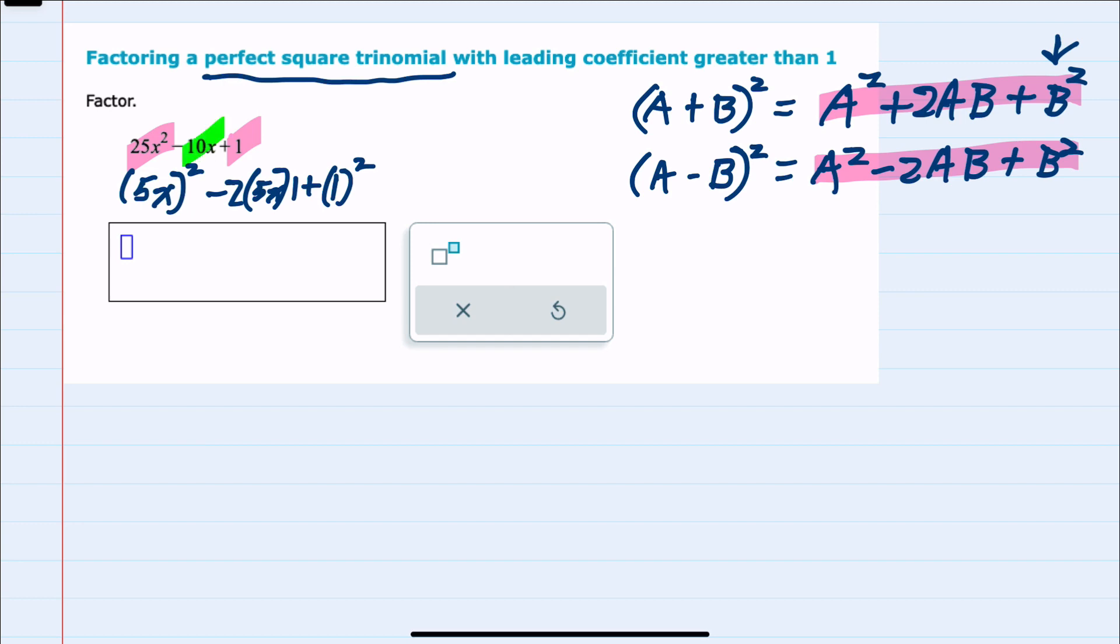and that the middle term is 2 times each one of those terms that are being squared, then we can recognize it here as this second case and know that it will factor into (a - b)². And here our a is 5x, so we have (5x - 1)².